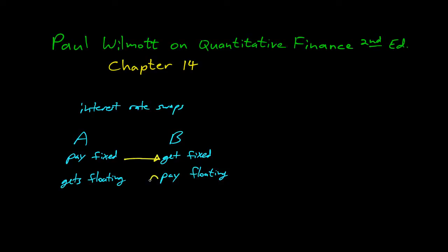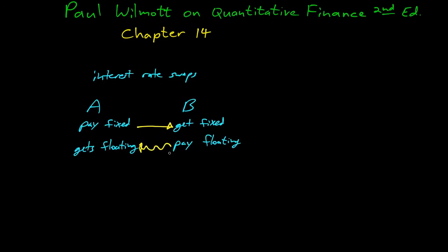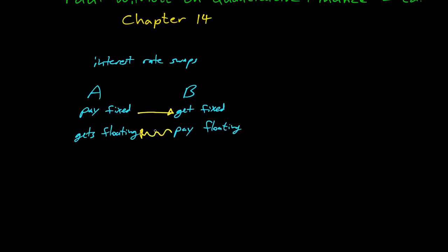A straight arrow here is the fixed rate and a wavy arrow here is a floating rate. So A is paying a fixed rate of interest every time period to B, and B is paying a floating rate of interest every time period back to A. As the interest rate fluctuates, people will win and lose and the payments will change.